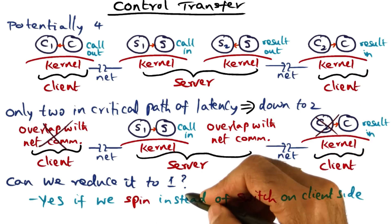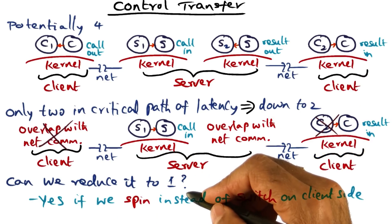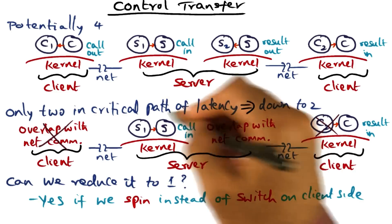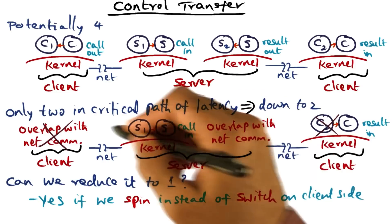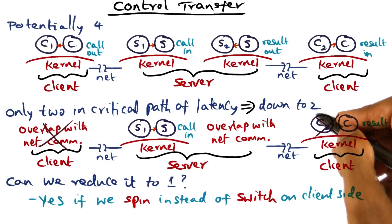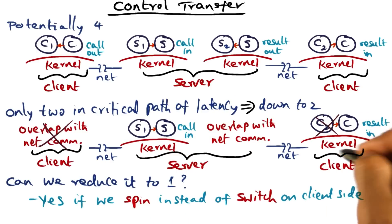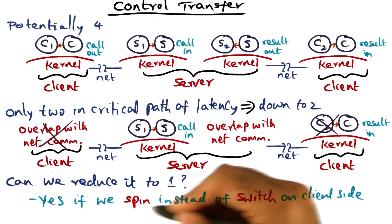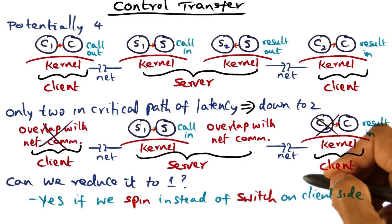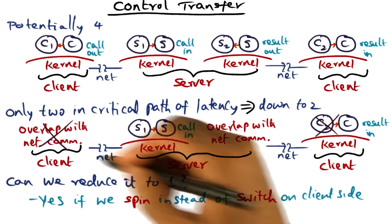The intent here is that we want to reduce the latency incurred in the RPC call. Since these two context switches were in the critical path of the latency, we want to eliminate at least one of them. The context switch on the server side is inevitable, but the context switch on the client side we can eliminate by spinning instead of switching in the first place.